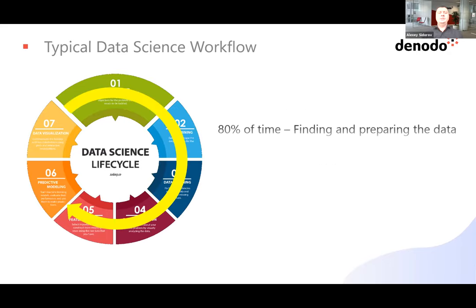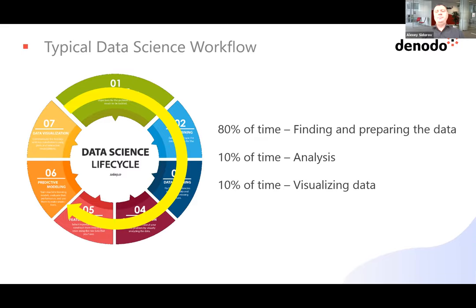However, if you take a look at this life cycle wheel, you can really see that 80% of the time we spend doing data science has nothing to do with data science as such. We're spending a lot of time finding, preparing, and getting access to data, trying to find features that would be available to us — and only 10% of the time are data scientists actually doing their job training the algorithms.